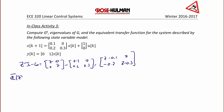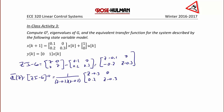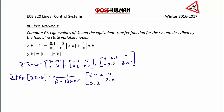Phi of z equals 1 over (z minus 0.1)(z minus 0.3) times the adjoint matrix [z minus 0.3, 0; 0.2, z minus 0.1]. This can be written element-wise as [1/(z minus 0.1), 0; 0.2/((z minus 0.1)(z minus 0.3)), 1/(z minus 0.3)].